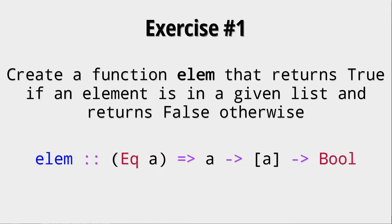The first exercise: create a function elem that returns true if an element is in a given list and returns false otherwise. Now don't be discouraged. The type signature looks a bit weird. The EQA is a so-called type class and we need it for this function definition, otherwise we couldn't do a comparison. What the type class is we will learn a bit later in this course. Okay, so pause the video now and please create such a function.